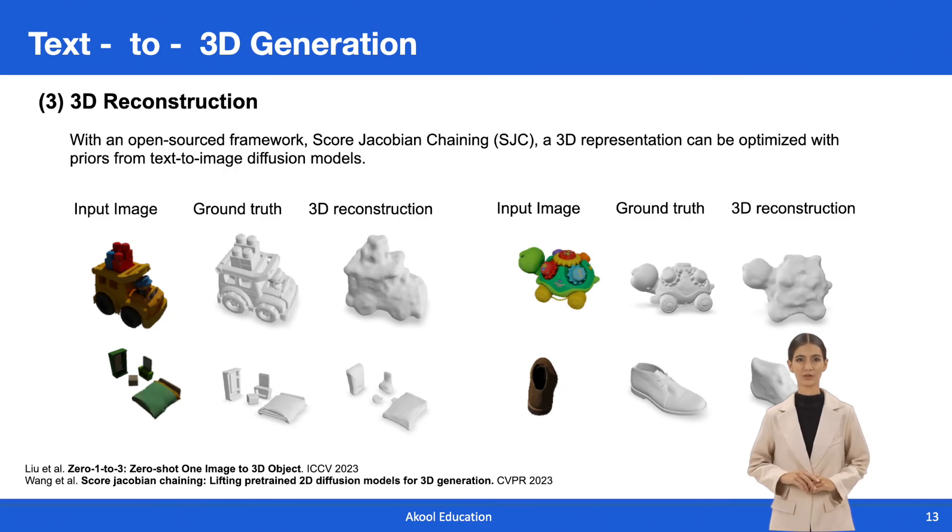Starting with a single image, 1-2-3-45 initially employs a view-conditioned 2D diffusion model, Zero-1-to-3, to generate multi-view images for the input perspective. Subsequently, it integrates a 3D reconstruction module based on an SDF-based generalizable neural surface reconstruction method. Additionally, several crucial training strategies are proposed to facilitate the reconstruction of 360-degree meshes. Notably, 1-2-3-45 achieves 3D shape reconstruction in significantly less time compared to existing methods, all without the need for resource-intensive optimizations.